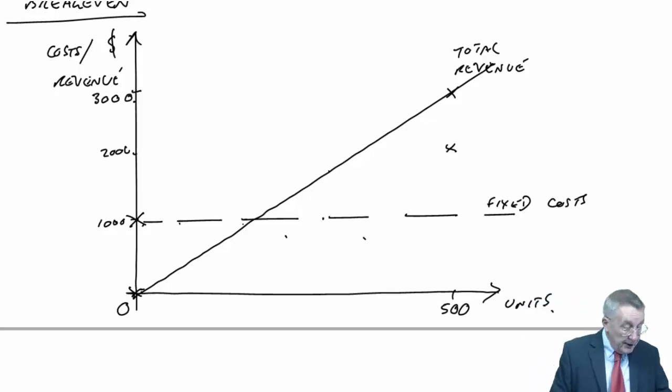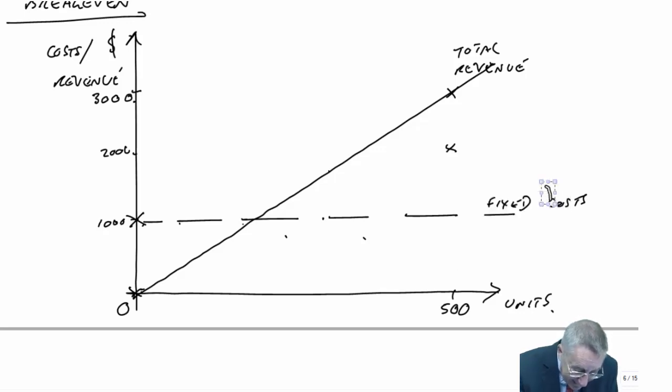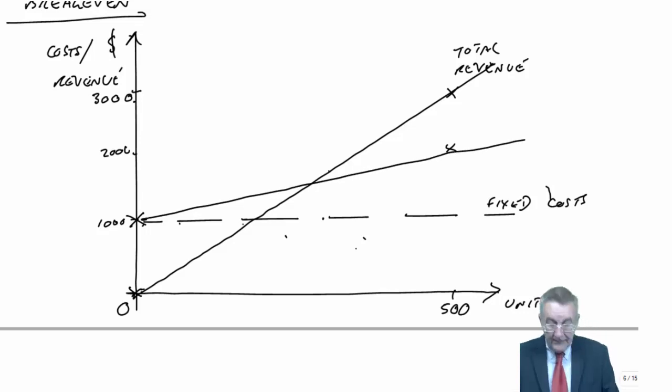With more units, obviously more variable costs. At 500 units, the variable cost would be, at $2, $1,000. So the total, the fixed costs plus the variable, would be $2,000. So total costs go from $1,000 at zero units up to $2,000 at 500 units.